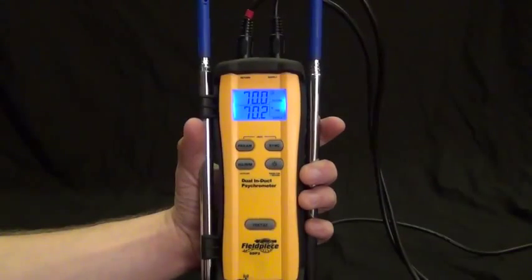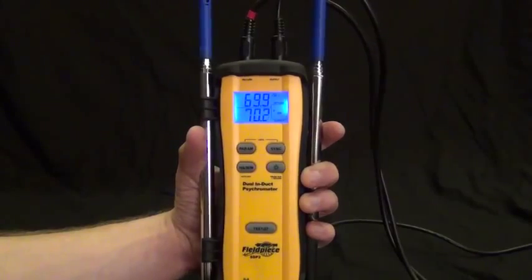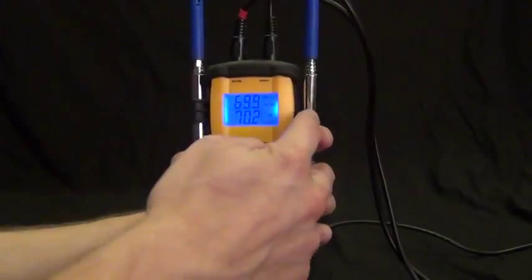All right, now let's get a closer look at the SDP2. This is a dual induct psychrometer and it has two probes, one for the return and one for the supply.